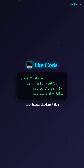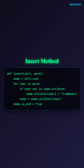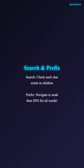Let me show you the code — it's surprisingly simple. First, we create a trie node class. Each node has two things: a dictionary called 'children' that maps characters to child nodes, and a boolean flag called 'is_end_of_word' that marks if this node completes a valid word. Next, we create the trie class itself with a root node. The insert method is elegant: start at root, and for each character in the word, check if it exists in children. If not, create a new node. Move to that child node. After processing all characters, mark the final node as end of word.